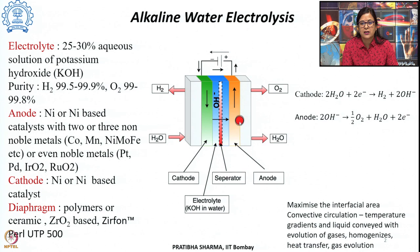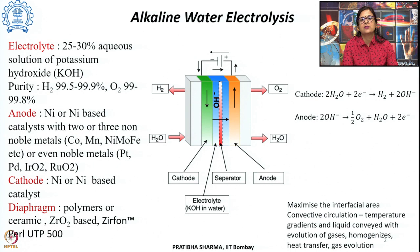As gases are evolved, convective circulation in the liquid electrolyte results in several benefits. However, this natural circulation is dominant at lower current densities. The advantage of convective circulation is that it homogenizes the electroactive species, helps in evolution of gases, and provides better heat transfer in the process.